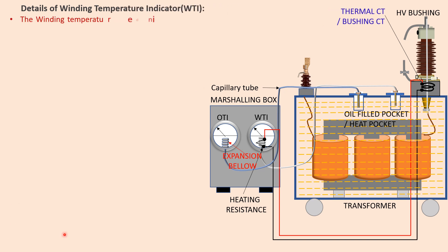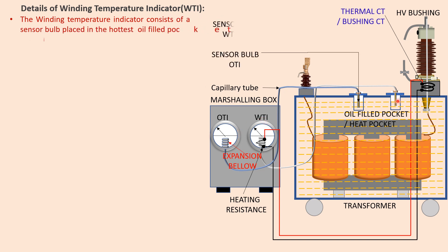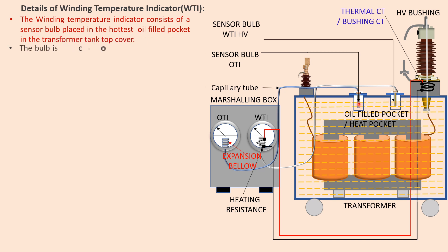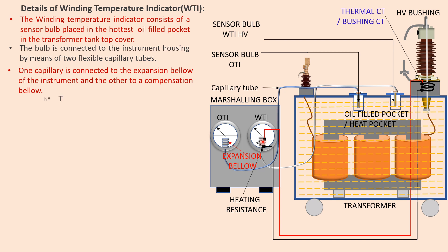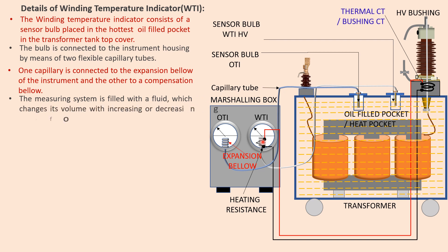The Winding Temperature Indicator consists of a sensor bulb placed in the hottest oil-filled pocket in the transformer tank top. The bulb is connected to the instrument housing by means of two flexible capillary tubes. One capillary is connected to the expansion below and the other to the compensating below. The measuring system is filled with a fluid which changes its volume with increasing or decreasing temperature.